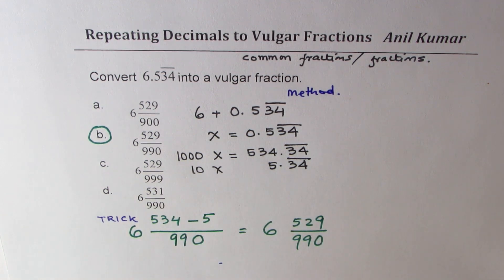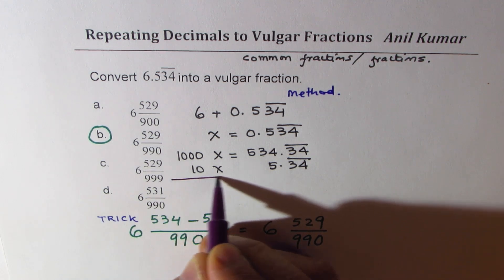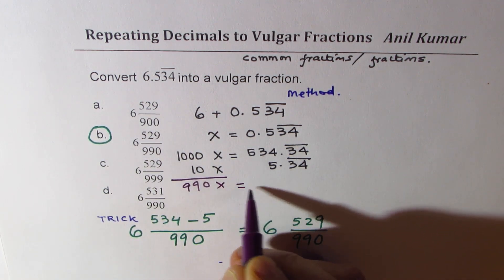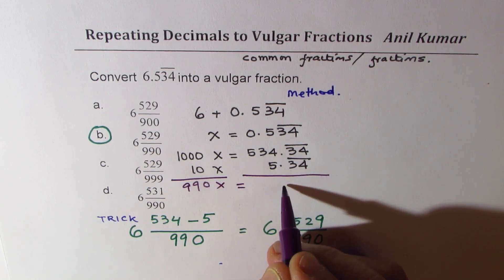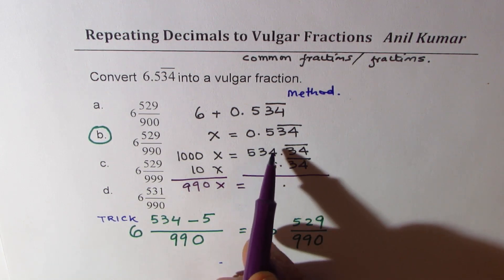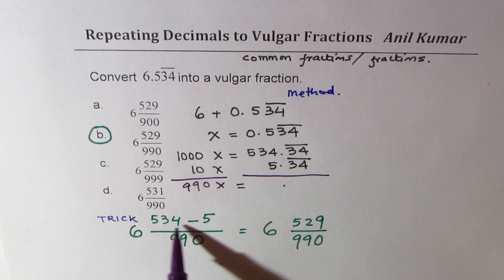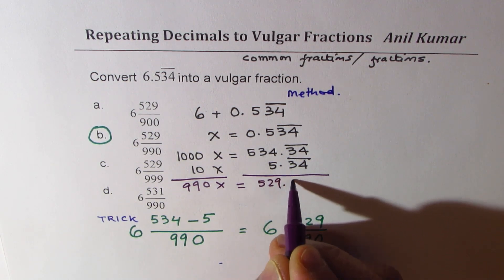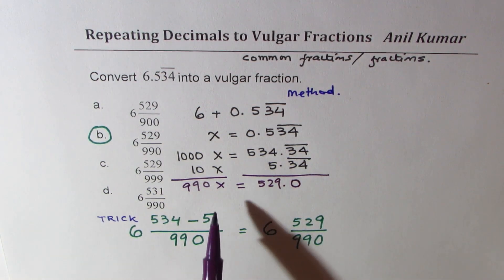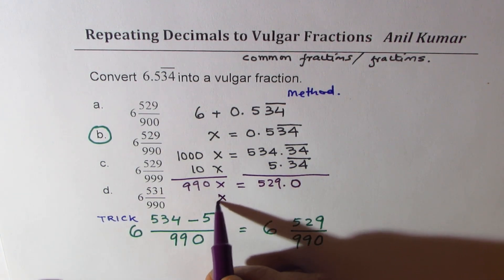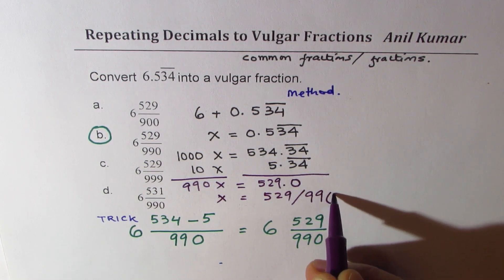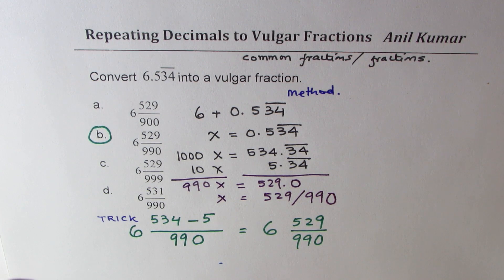Now when you take away, you get 990x equals to, and when you take away this the recurring part cancels. You get 534 minus 5, do you see that? 534 minus 5 which is 529.0, and then x of course will be equals to 529 divided by 990. So we get the same answer.